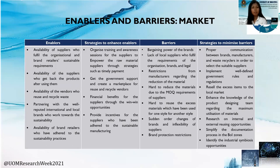Under market enablers and barriers: under enablers, availability of suppliers within the organization meeting brand retail sustainable requirements, and availability of suppliers who take back products after use. Under strategies: organize training and awareness for suppliers, and empower raw material suppliers through timely payment. Under barriers: bargaining power of brands and lack of local suppliers who fulfill the requirements of the organization. Under strategies: implement well-defined government rules and regulations.